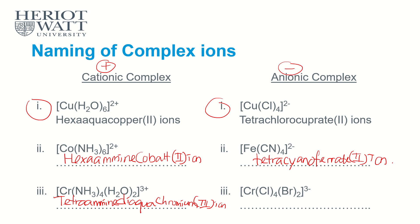Now let's look at the last example with negative ions. We have bromo and chloro. Alphabetically, bromo comes first. We have di-bromo, then tetra-chloro. Because the complex is negative, chromium becomes chromate. The full name is di-bromo tetra-chloro chromate(III).